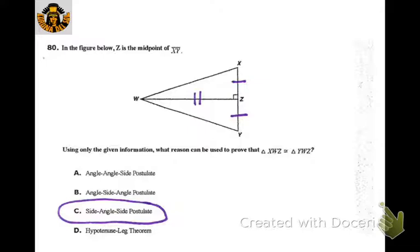Z is the midpoint of XY, so the two little segments are congruent. Of course, they're sharing the side. And there's a right angle marked there. So we have enough information to show side-angle-side.